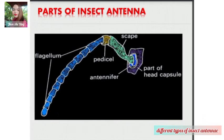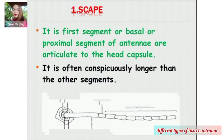The first part is the scape. It is the first segment, or basal or proximal segment, of the antennae, articulated to the head capsule. It is often conspicuously longer than the other segments.